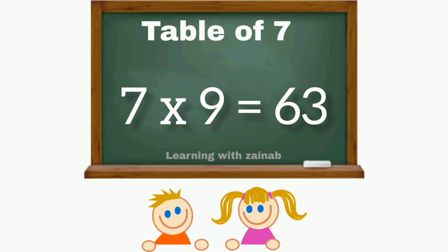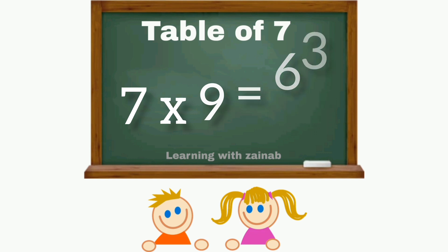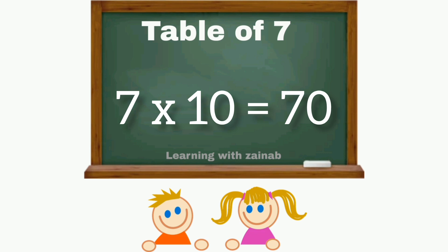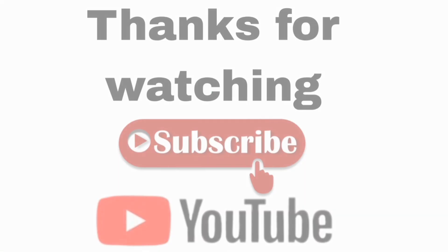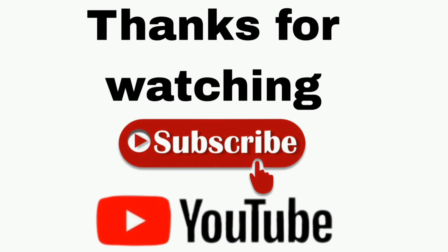Seven nines are sixty-three. Seven tens are seventy. Thank you.